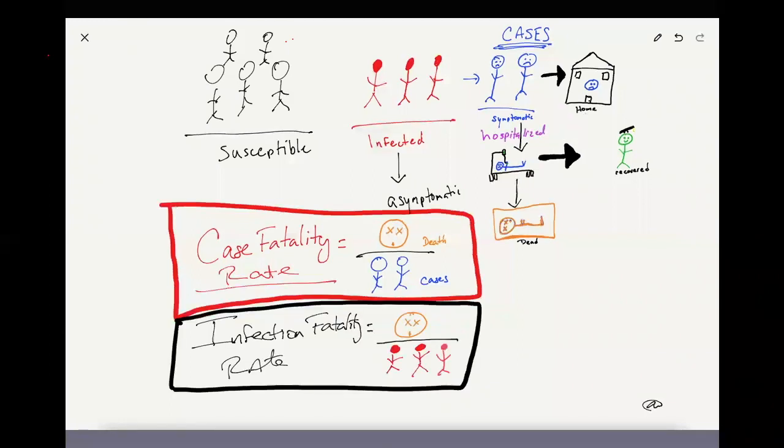When you look at the number of deaths per those that are infected, that's called the infection fatality rate. That's what we're seeing being mislabeled as a case fatality rate in the lay press. They haven't been connecting the two correctly and understanding that the case fatality rate is different than infection fatality rate. Infection fatality rates are expected to be lower than case fatality rates because it includes asymptomatic patients.